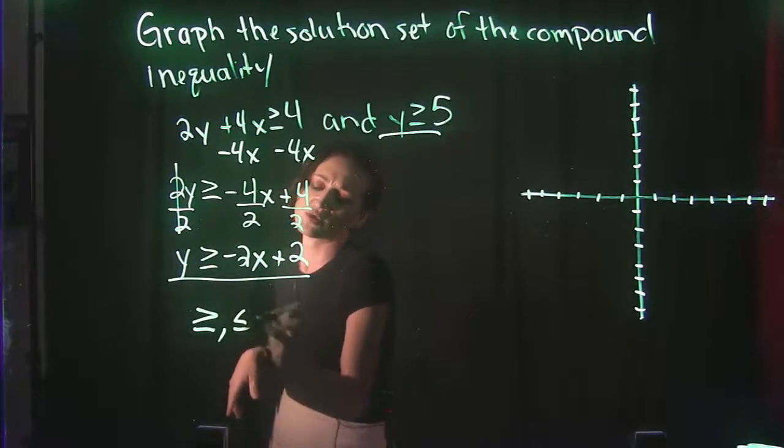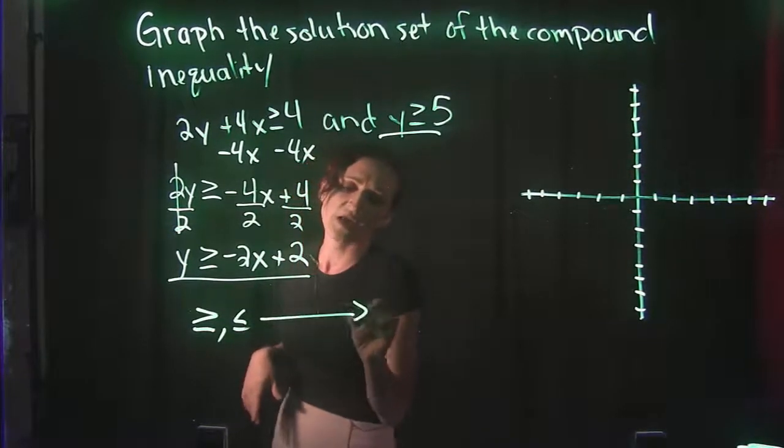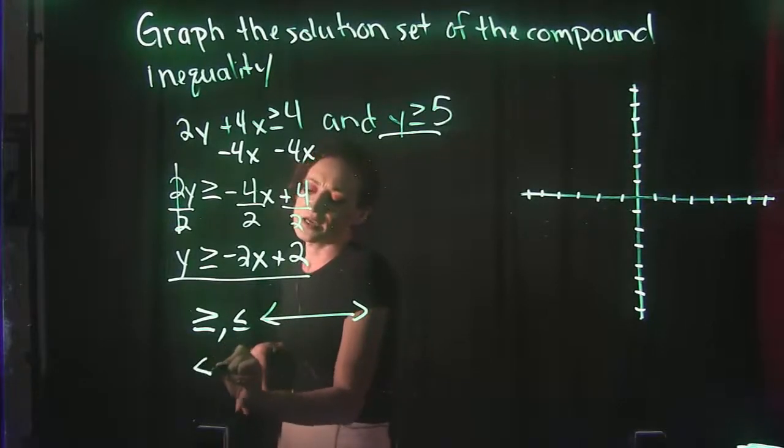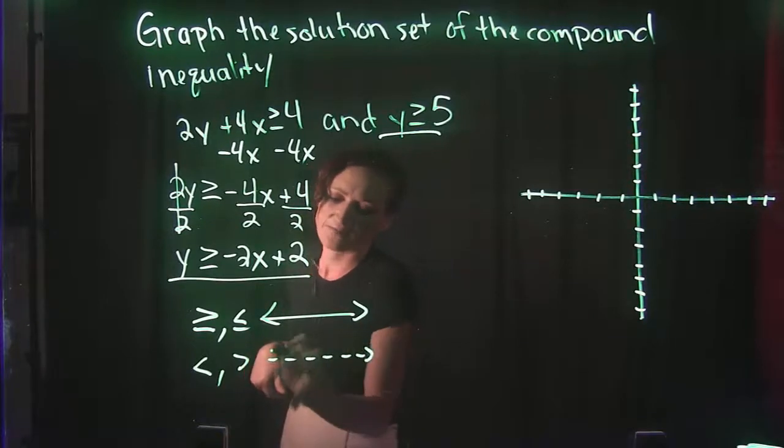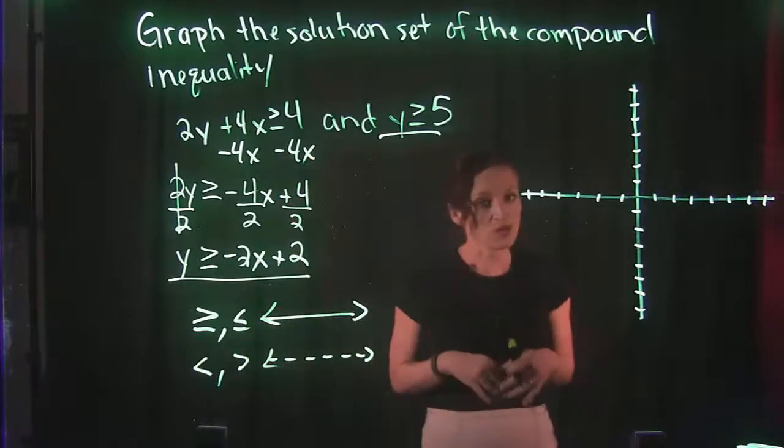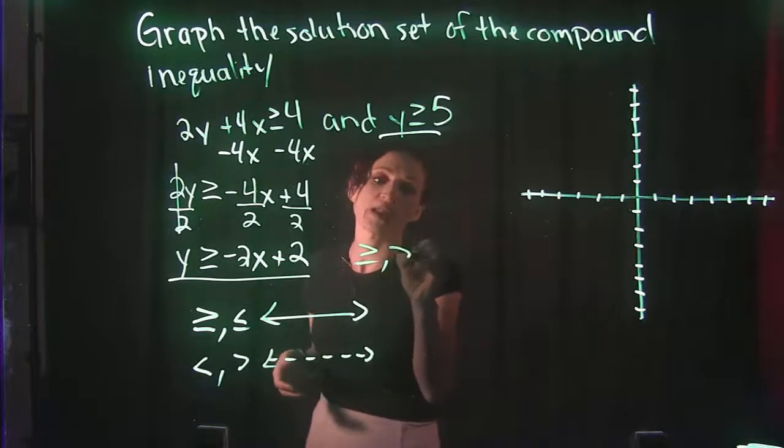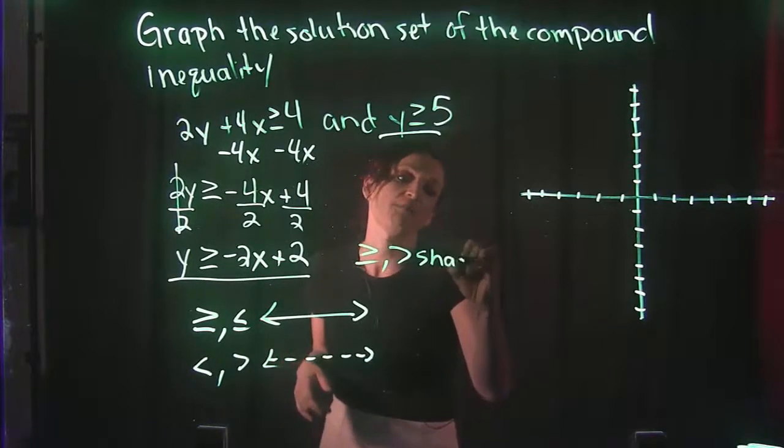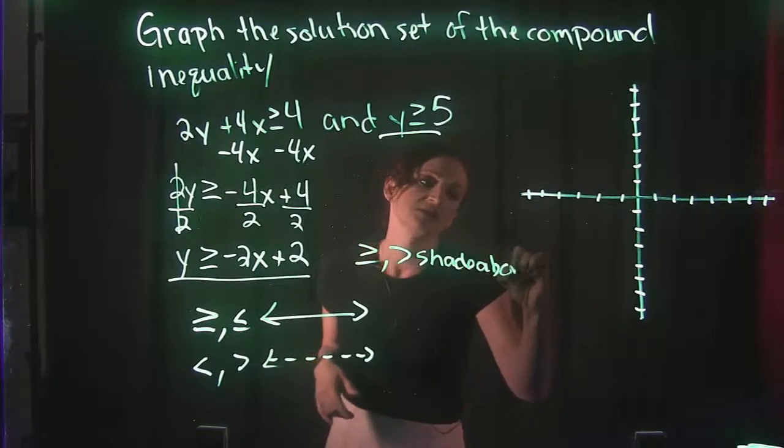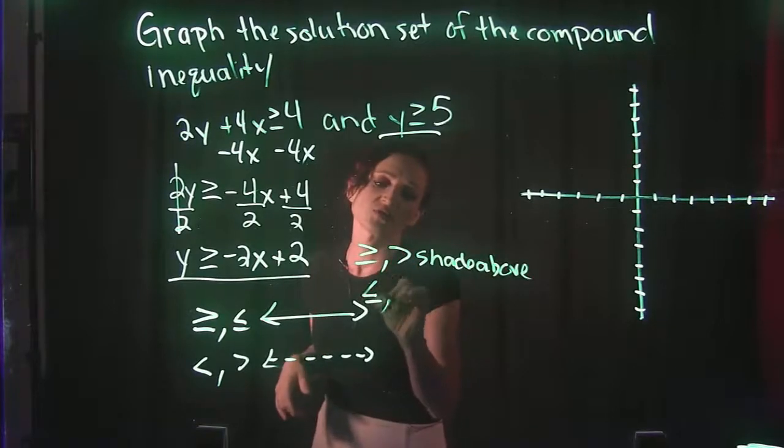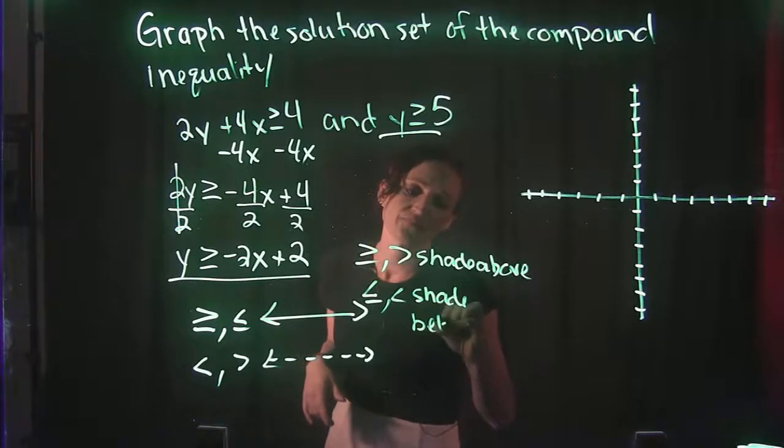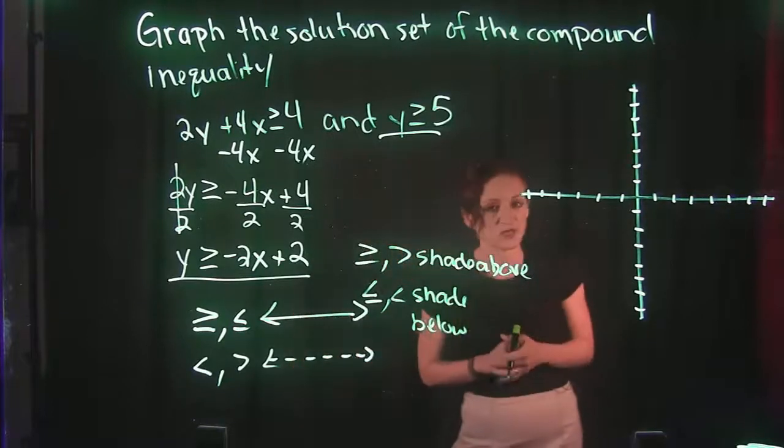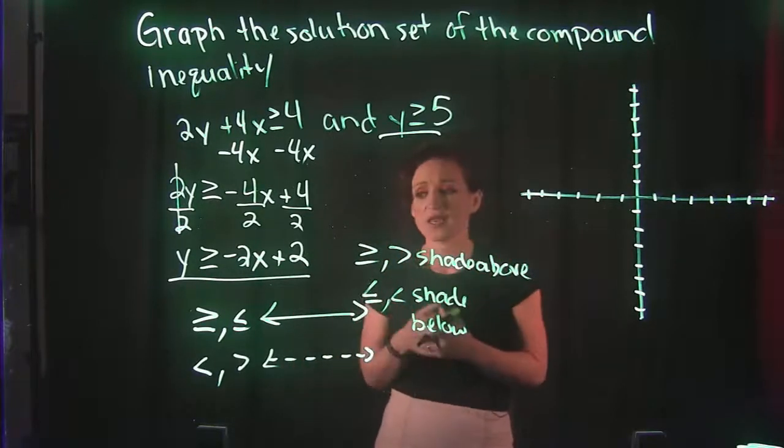if we have a greater than or equal to or less than or equal to symbol, that is a solid line. A less than or a greater than symbol is a dashed line. Also greater than or equal to or greater than, we're shading above the line. So these are some things that we need to keep in mind when it comes to graphing inequalities.